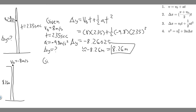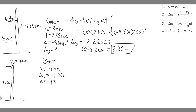Writing down the given for Part B: V₀ is -8 m/s. The change in Y is also negative — it's -8.26 meters, because it goes down that much. Remember in kinematics you want delta Y, not just the height. The acceleration is still -9.8 m/s² since it's going down. So we have V₀, delta Y, and a — the only variable left to find is T.